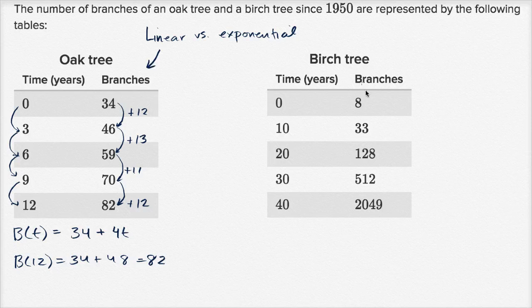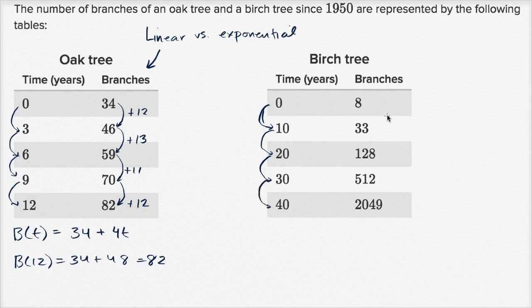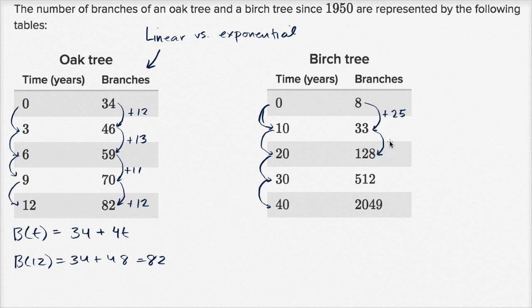Now let's look at the birch tree. So time equals zero, fixed change in time. We have a fixed change in time. Every time we are moving into the future, a decade. Let's see, our change in branches, we go from eight to 33. That is plus 25 branches. Then we go from 33 to 128. Well that's way more than 25 branches. That's going to be five less than 100. So that's going to be plus 95 branches. So this clearly is not a linear model.